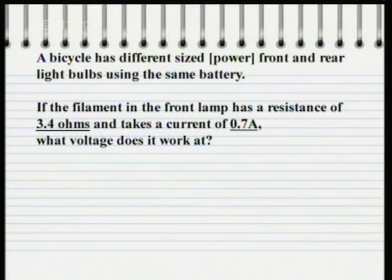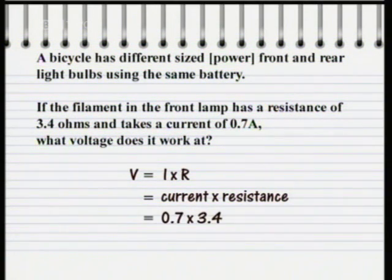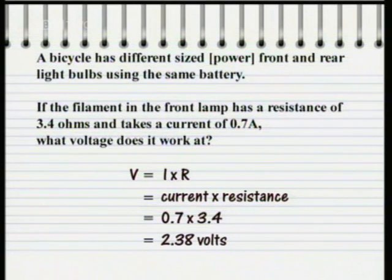From Ohm's law, we know that the voltage V equals I times R — the current times the resistance. So V equals 0.7 amps times 3.4 ohms. That's 2.38 volts. So the battery is supplying 2.38 volts to the front bulb.